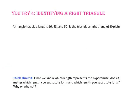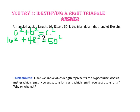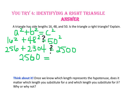Pause the video and do you try number 4. A triangle has side lengths 16, 48, and 50. Is the triangle a right triangle? Let's use 50 in place of c since it is the longest side, and 16 and 48 for a and b. 16 squared is 256, 48 squared is 2304, and 50 squared is 2500. 256 plus 2304 is 2560. Since 2560 does not equal 2500, the triangle is not a right triangle.